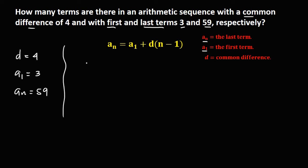So to solve for the number of terms on this arithmetic sequence, using this formula, we have a_n, that's 59, equals a_1, that's positive 3.